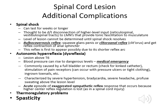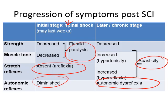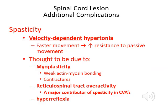A very common complication of spinal cord injuries is spasticity. It has been defined as velocity-dependent hypertonia — meaning if you move the extremity very slowly, the tone doesn't increase much, but if you lengthen the muscle very quickly, you get more tone and increased resistance to passive movement. There are many theories about what causes spasticity in spinal cord injury patients.